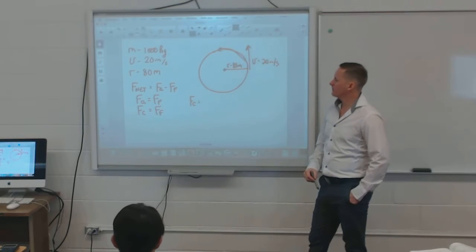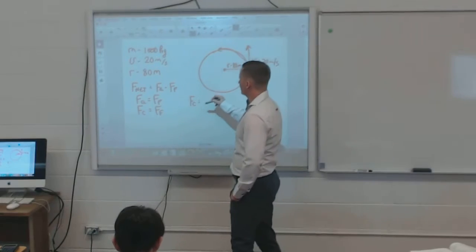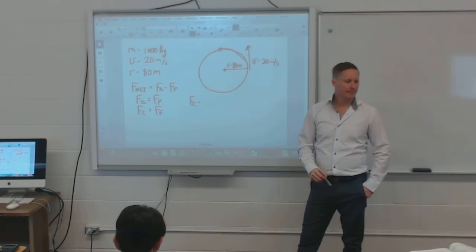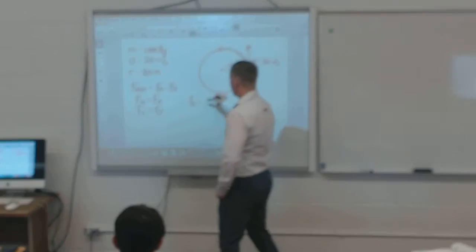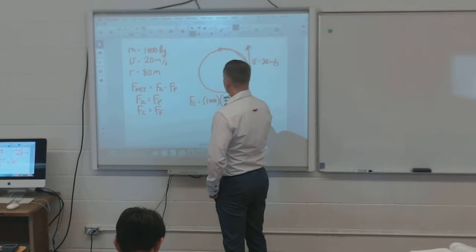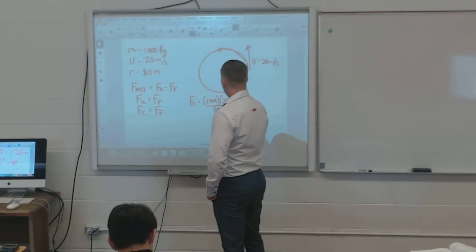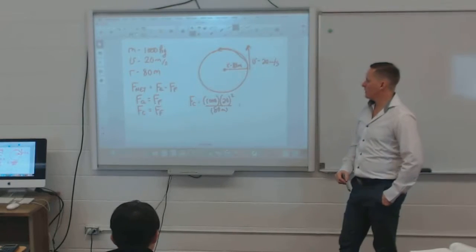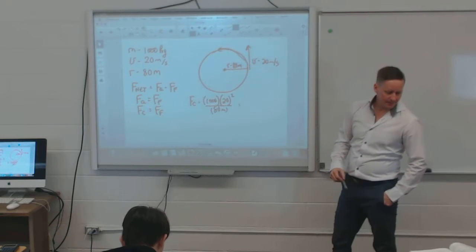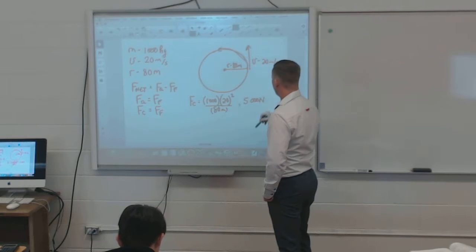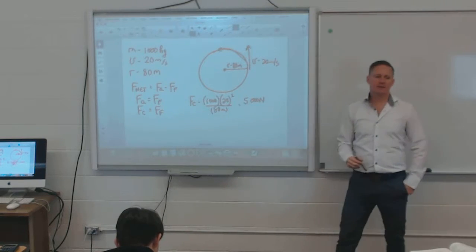I'm given mass, velocity, and radius, so I use F = mv²/r. My mass is 1,000 kg, velocity is 20 m/s, and radius is 80 m. So 1,000 × 20² ÷ 80 = 5,000 newtons of friction needed to prevent skidding.